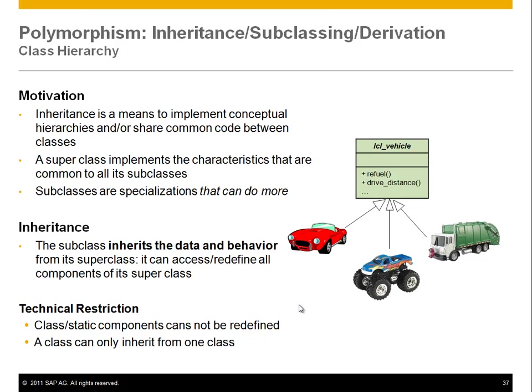A subclass can define an additional method or change the implementation of refuel. For instance, in a big truck there are two tanks — typical trucks actually have tanks on both sides, or a reserve tank. So refuel may need to handle two tanks and two variables to keep the fuel level separately. You need two status variables and the refuel method will be a little different. Changing the implementation is called redefinition. In the truck case, you would redefine the refuel method, and maybe drive distance as well.